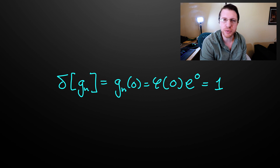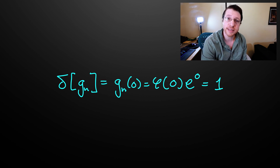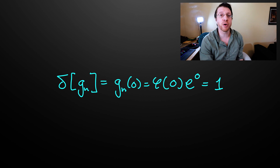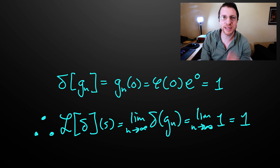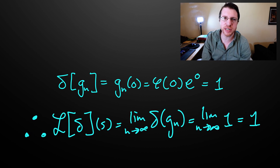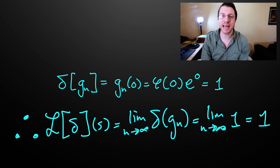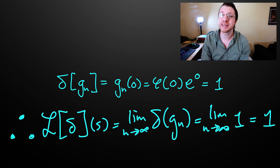With that definition, let's look at the Laplace transform of the delta function, which according to Nagle, Saff and Snyder should be 1. For each G_n, delta of G_n is equal to G_n of zero, which equals phi of zero times e to the zero. But both phi of zero and e to the zero are 1. Thus, the sequence whose limit defines our Laplace transform is a constant sequence, and its limit is 1.